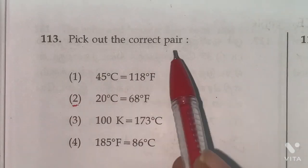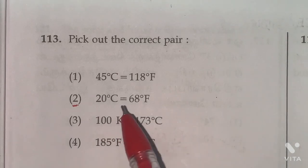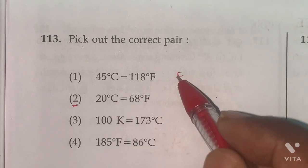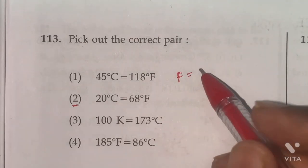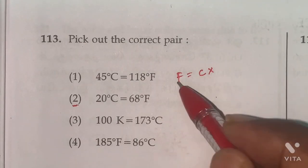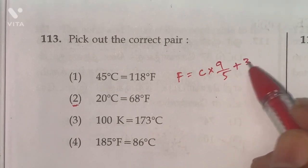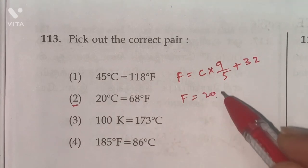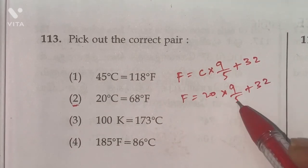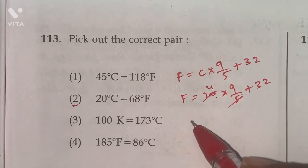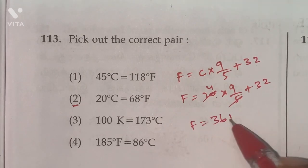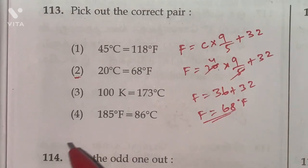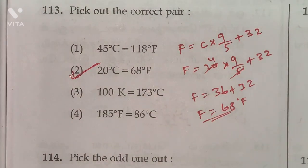113th pick out the correct pair. The given conversions degree Celsius to degree Fahrenheit. Consider option 2. We know that formula relation between degree Fahrenheit and degree Celsius is F equals C into 9 by 5 plus 32. 4 times 5 is 20, 9 times 4 is 36, so 36 plus 32, so value is 68 degree Fahrenheit. So option 2 is the right answer.